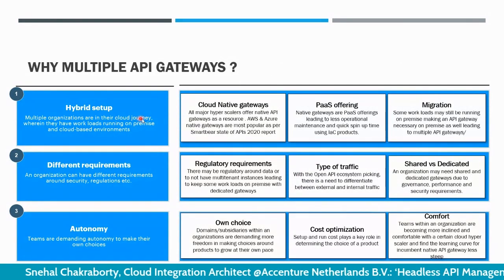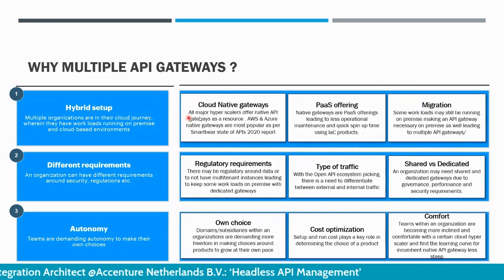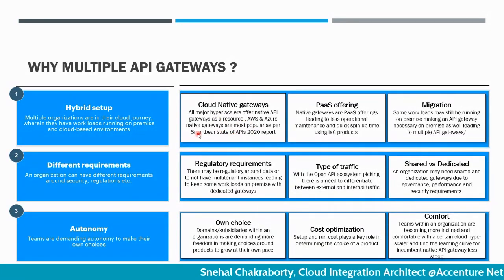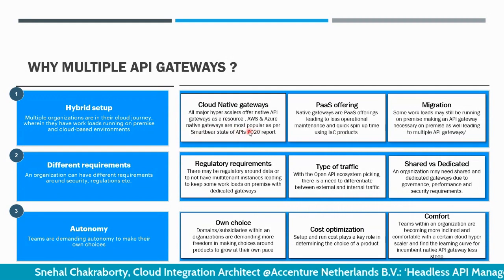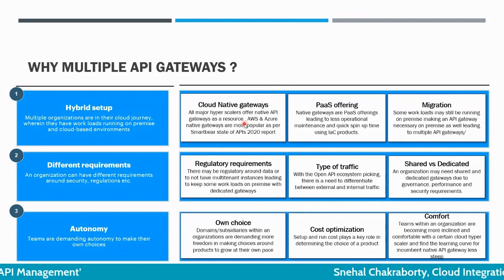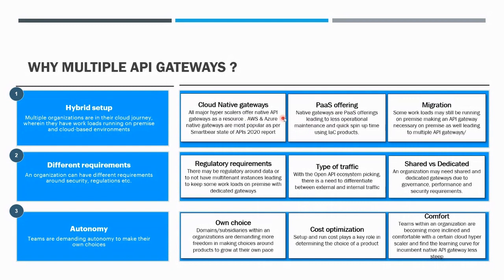The reasons for going for multiple API gateways include the hybrid setup arising from cloud journeys. Most organizations are doing their cloud journeys now, and there is an inclination toward using cloud-native gateways. According to the SmartBear State of APIs report, AWS and Azure native gateways were the most popular. These cloud-native gateways come as PaaS offerings, making it easy to spin them up using infrastructure-as-code tools like Terraform.